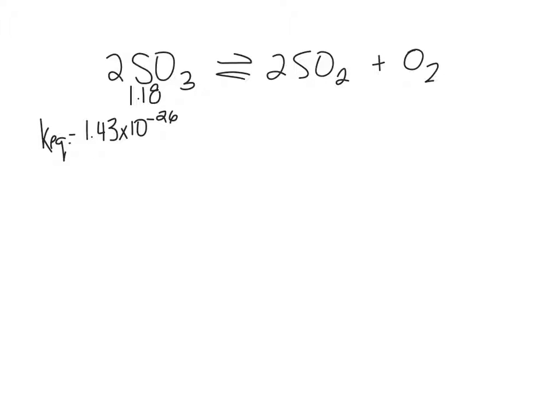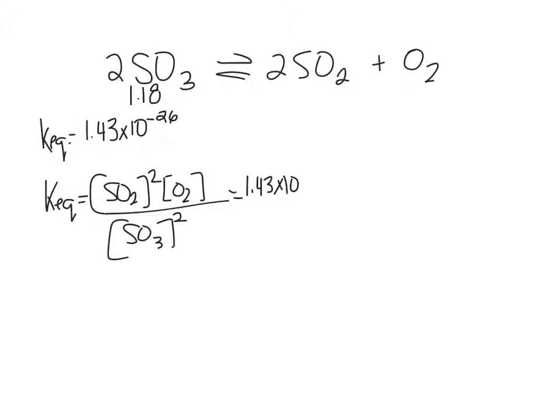All right, so what I want you to do, set up your K-expression and set up your ice table. How far did you get? I wrote my K-expression out, and that's where I did the ice table. I wrote my K-expression and then when I took the numbers in, I just got stuck there. Okay. Did you get that?